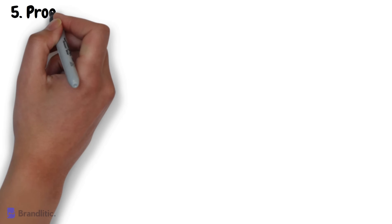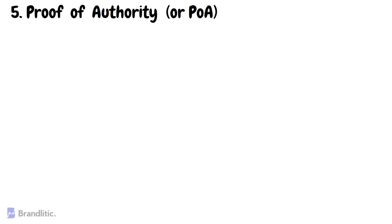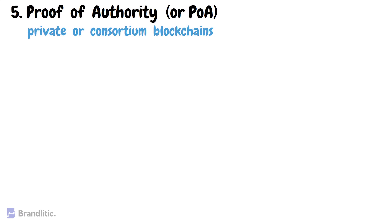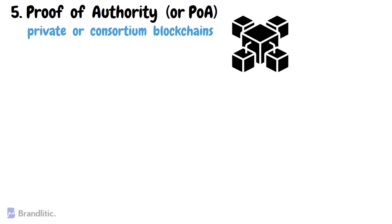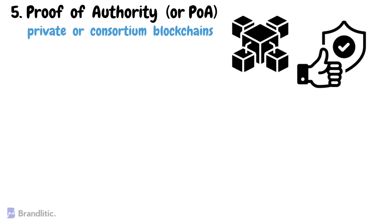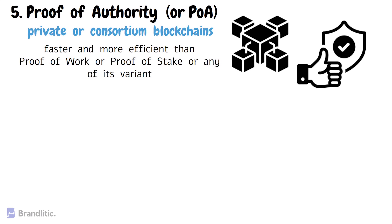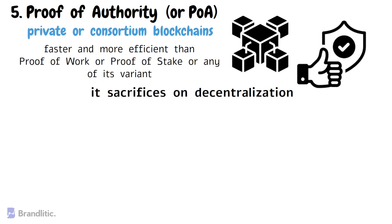Number five: Proof of Authority, or POA. This is a consensus algorithm primarily used in private or consortium blockchains. The validators in this network are known and trusted individuals who are authorized to validate transactions on the network. From a performance perspective, this algorithm is faster and more efficient than Proof of Work or Proof of Stake or any of its variants, but in doing so it sacrifices decentralization, which is one of the crucial fundamentals of blockchain technology.